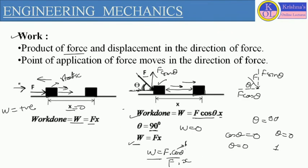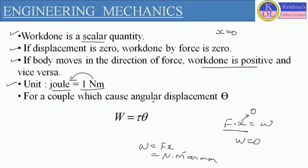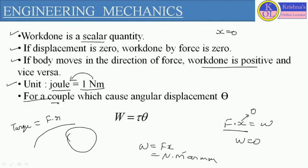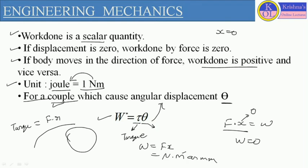So far I have defined work done and force applied in a rectilinear direction. Now for an object moving along a curve or having rotational motion, in place of force we consider torque, defined as force into radius. For a couple causing angular displacement theta, work done in curvilinear or rotational motion is defined as the product of torque and angular displacement theta. This term applies for rectilinear motion and the torque-theta term applies for curvilinear or rotational motion.